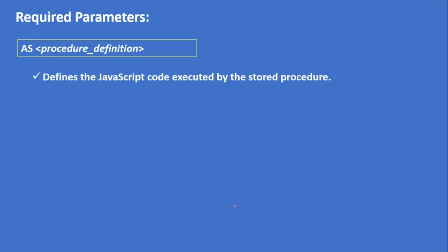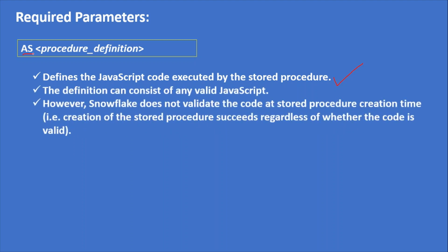The AS procedure definition is also mandatory — this defines the JavaScript code executed by the stored procedure. After the AS keyword you write your code with a combination of JavaScript and SQL. The definition can consist of any valid JavaScript. However, Snowflake does not validate the code at stored procedure creation time, meaning creation succeeds regardless of whether the code is valid or invalid.